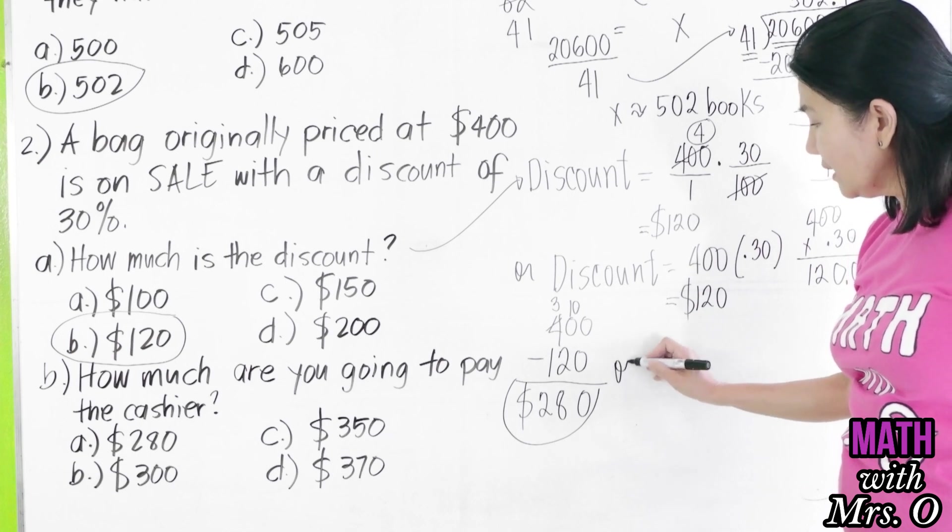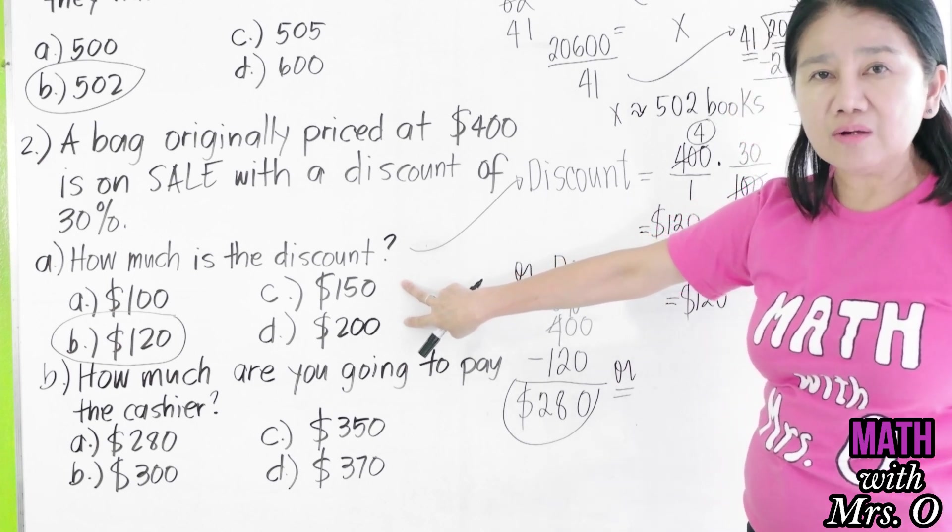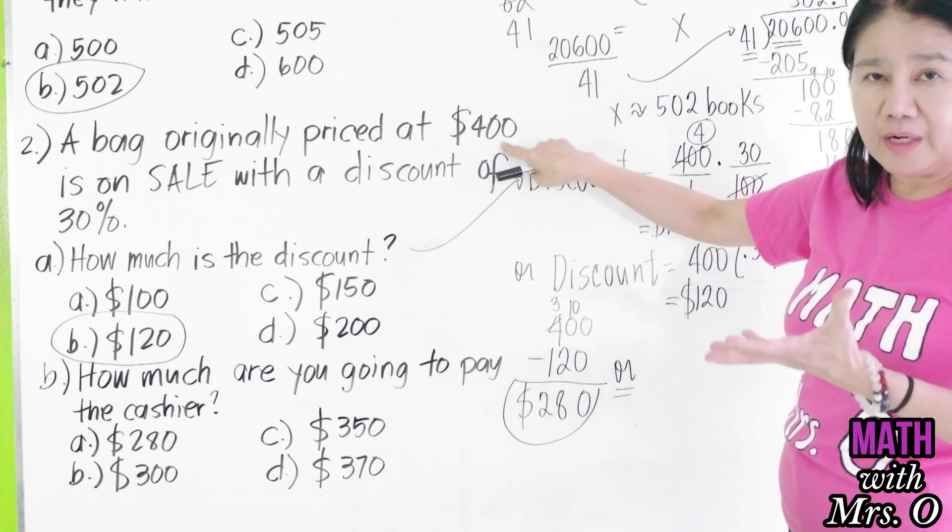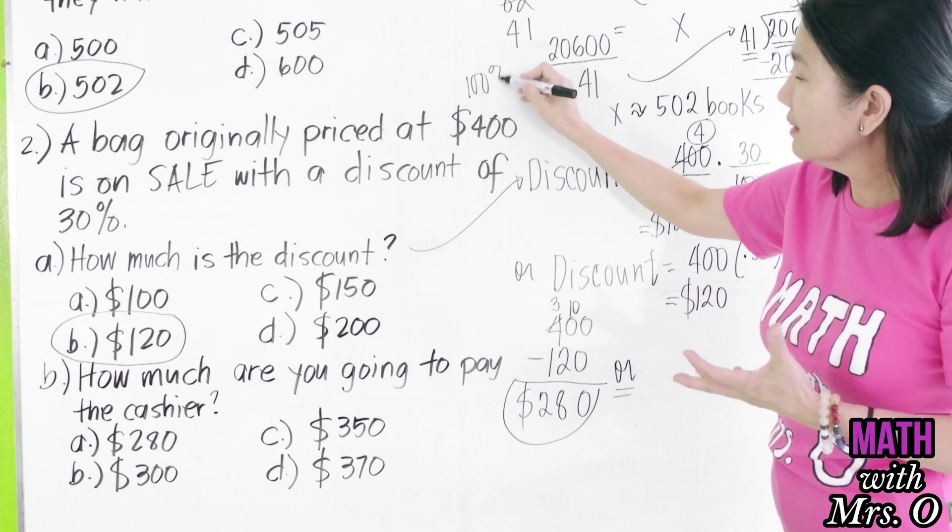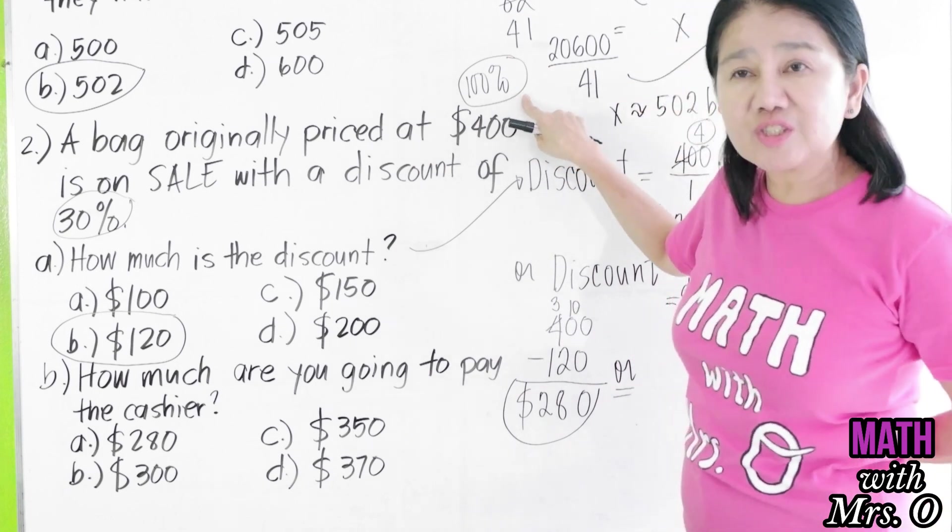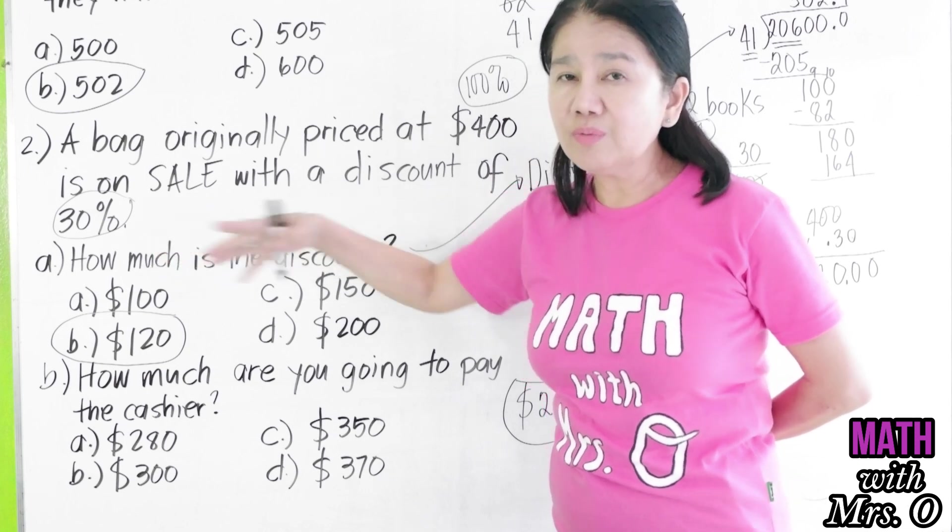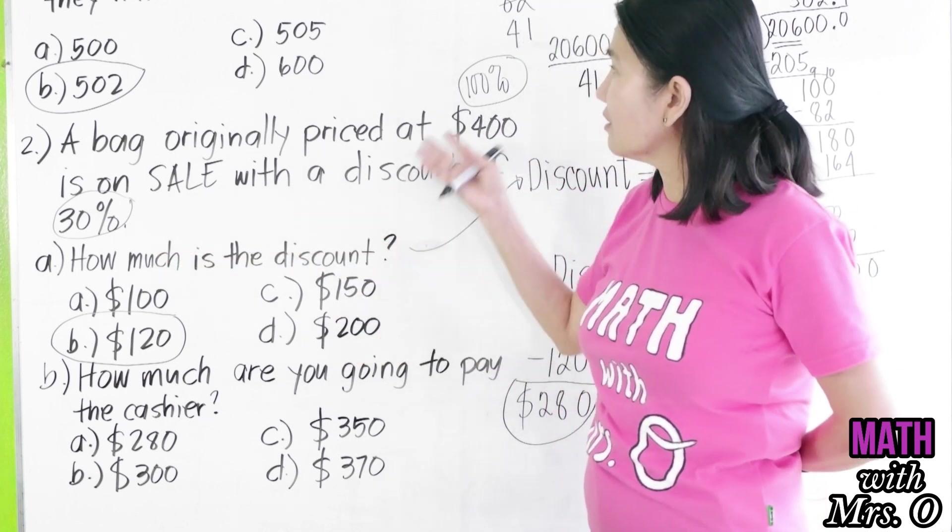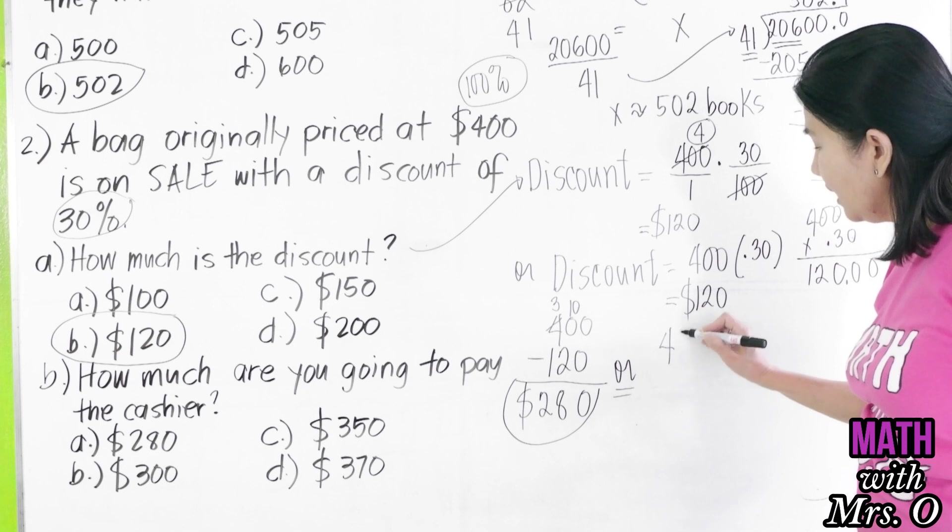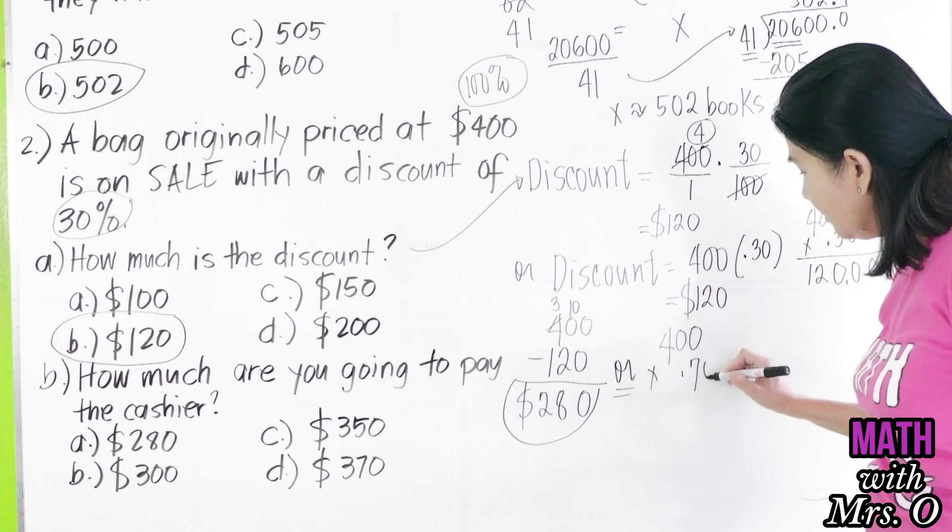Now, if you want to take a shortcut and you are not asked to find the discount, you can go straight. So, 400 is the total price, which is 100%. Less the discount, which is 30%. 100% minus 30% is 70%. Meaning, you will pay the cashier 70% of the original price. Therefore, here you will have 400 dollars times 0.7.